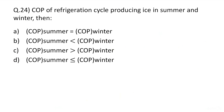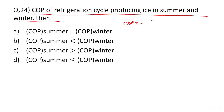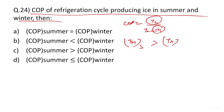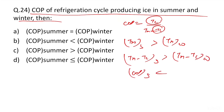Question 24: Compare COP of a refrigerant cycle producing ice in summer vs winter. COP = T_lower / (T_higher − T_lower). T_lower is constant (ice at 0°C). T_higher in summer > T_higher in winter, so (TH − TL) in summer > (TH − TL) in winter, therefore COP of summer < COP of winter. Correct answer is B.